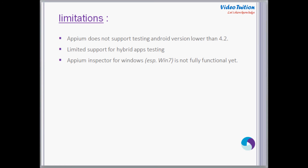For Android versions lower than 4.2, you can use the Selendroid test automation framework. The next limitation is that Appium does not completely support automation of hybrid applications — for example, switching from a native mobile environment to a web page and vice versa is not fully supported, though it can be achieved with some workarounds. The last point is that the Appium Inspector for Windows is not fully functional yet, so you need to rely on the Android UI Automator Viewer, which doesn't provide properties of embedded objects like WebView. There is also a bug reported for Appium Inspector throwing exceptions on Windows 7.